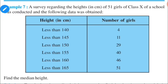A survey regarding the height of 51 girls of 10th standard of a school was conducted and the following data was obtained. The first column is height and second column is number of girls. The height is given in less than form: less than 140, less than 145, less than 150, less than 155, less than 160, and less than 165, with corresponding number of girls.